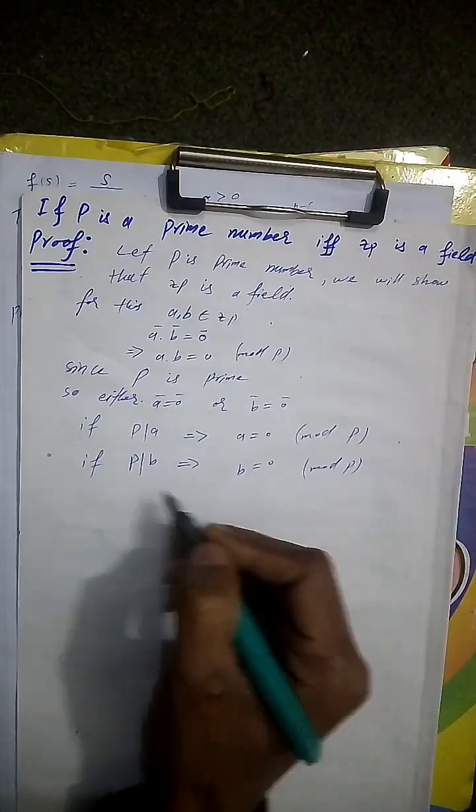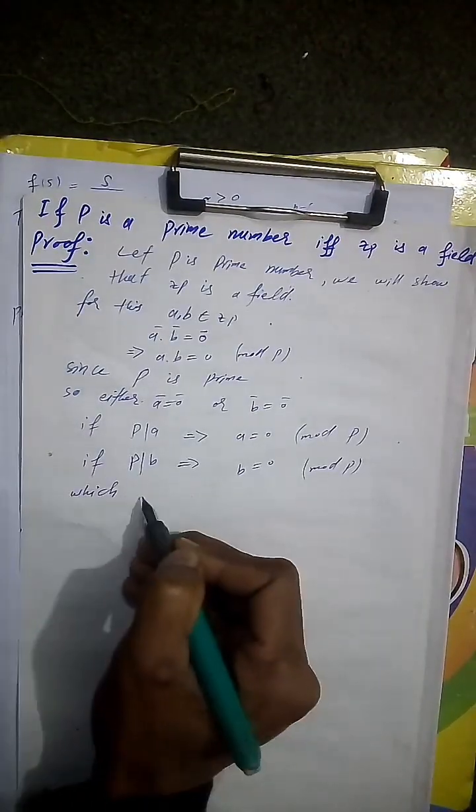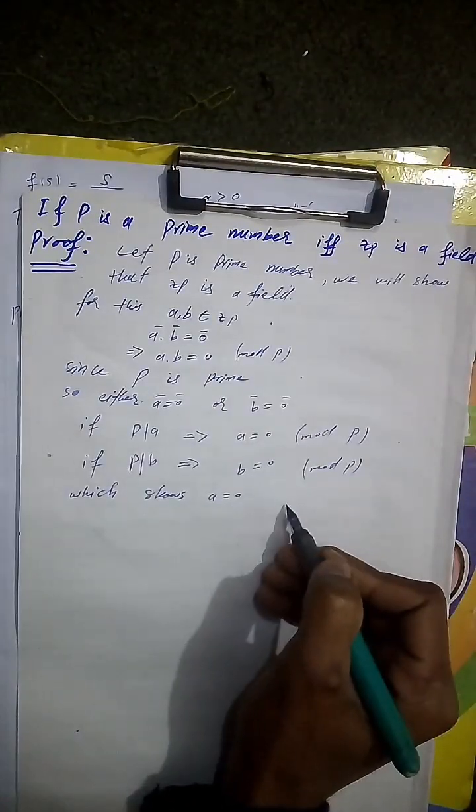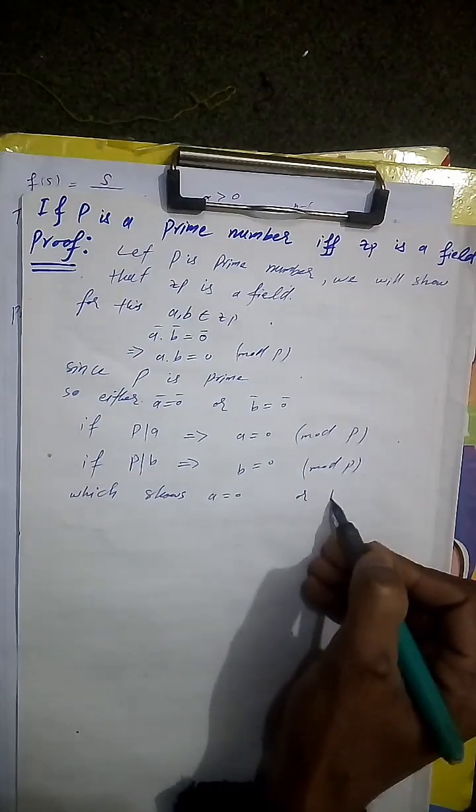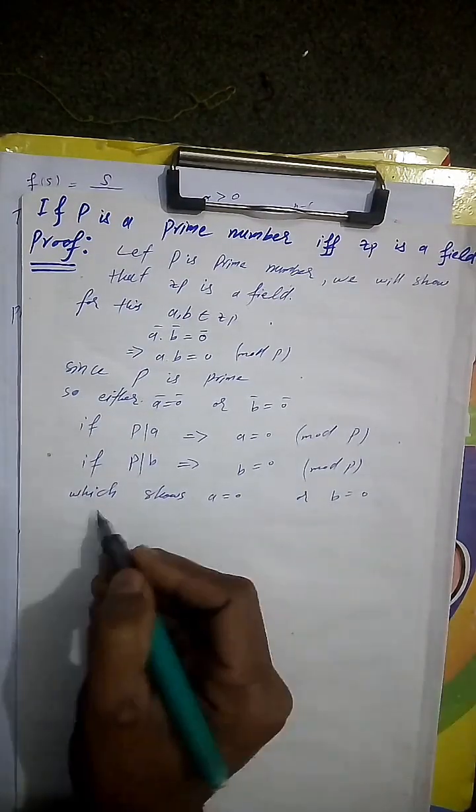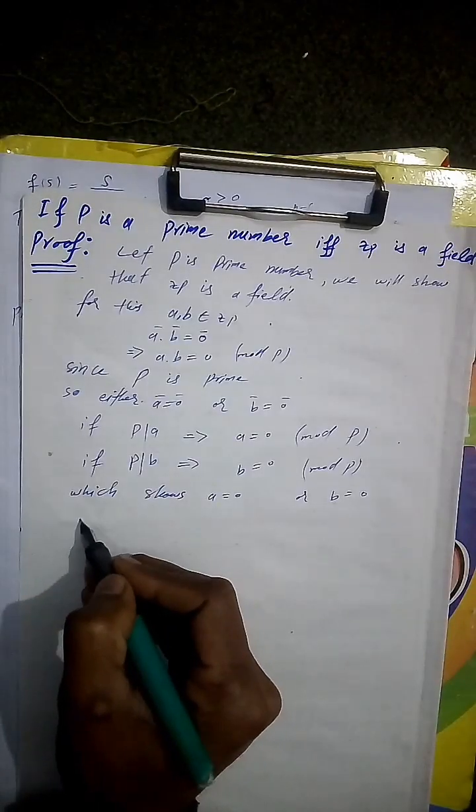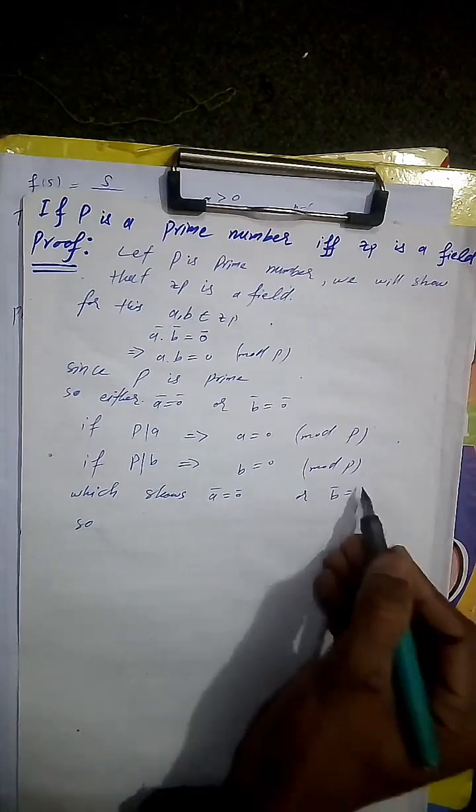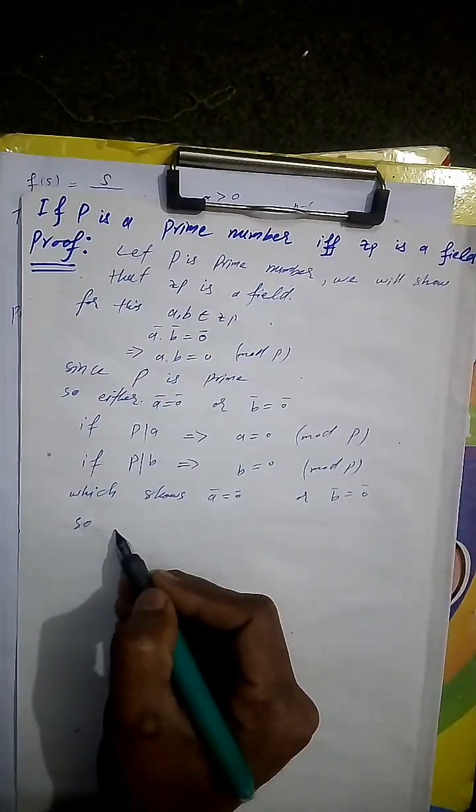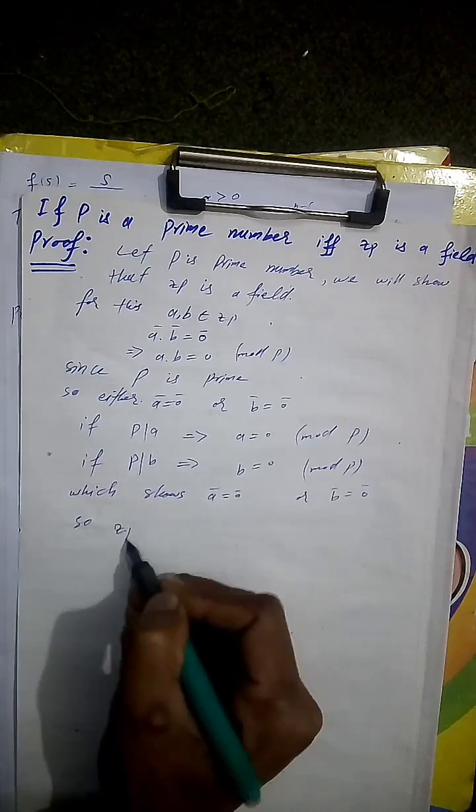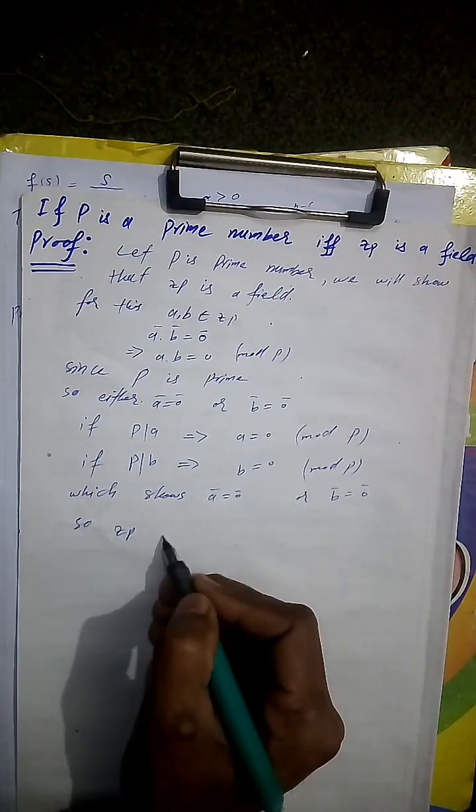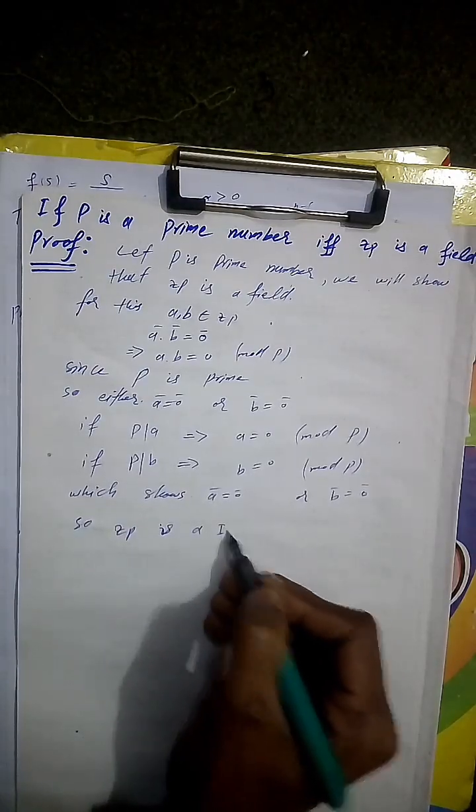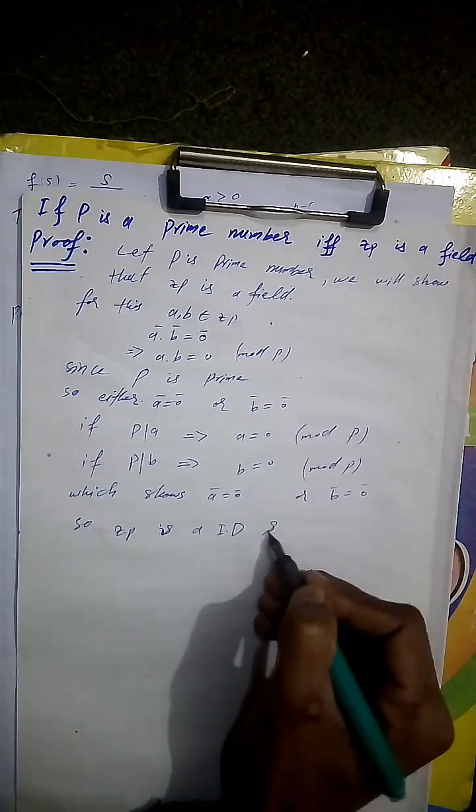We show that a equal to zero, b equal to zero. So this result, we show that Zp is an integral domain.